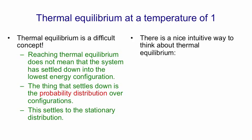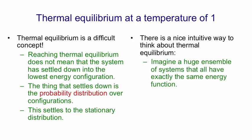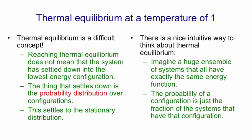A nice intuitive way to think about thermal equilibrium is to imagine a huge ensemble of identical systems that all have exactly the same energy function. So imagine a very large number of stochastic Hopfield nets all with the same weights. Now in that huge ensemble we can define the probability of a configuration as the fraction of the systems that are in that configuration.